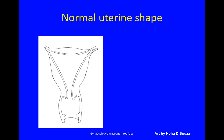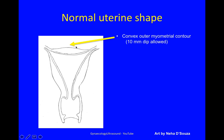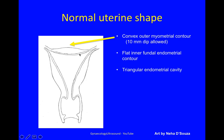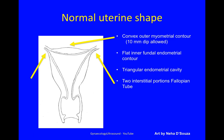This is a normal uterine shape in the coronal view on 3D. It has a convex outer myometrial contour — you are allowed to have a 10mm dip and still call it normal. A flat inner fundal endometrial contour, a triangular endometrial cavity, and two interstitial portions of the fallopian tube.